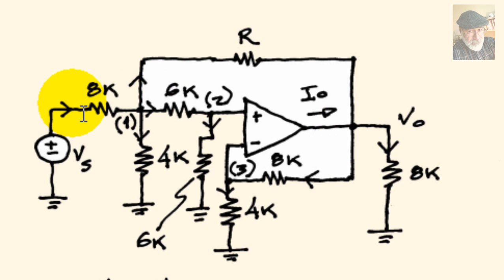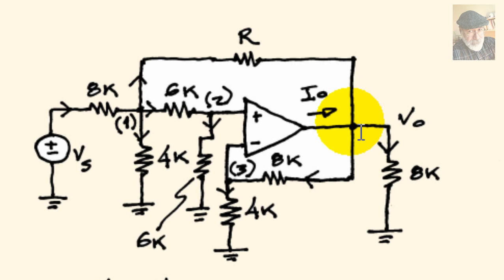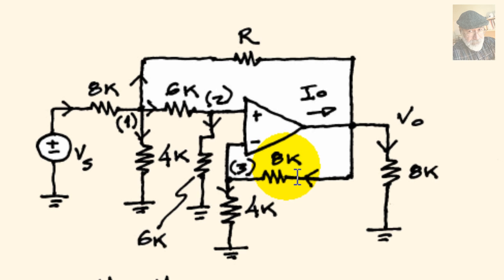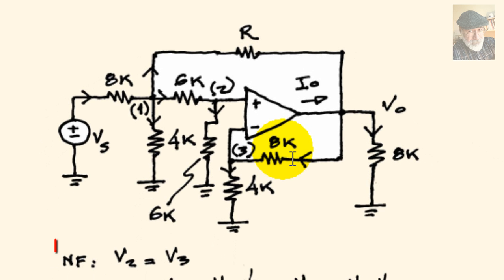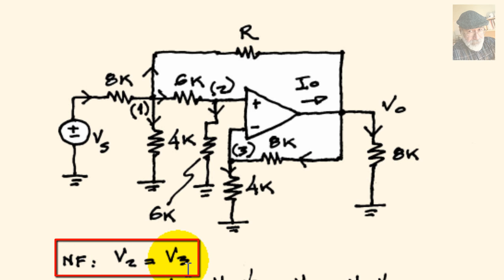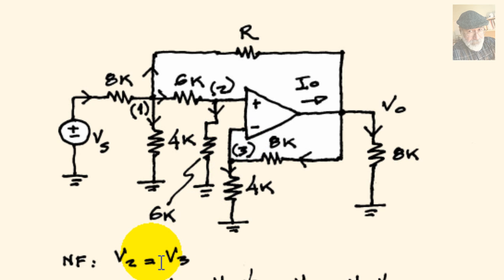The branch current directions have been chosen arbitrarily. We begin by asking the question: is there negative feedback? Yes, there is. There is a resistor between the output node and the inverting node — you see this 8-kilohm resistor — so there is negative feedback. We write the negative feedback equation NF: VP equals VN, meaning V2 is equal to V3.